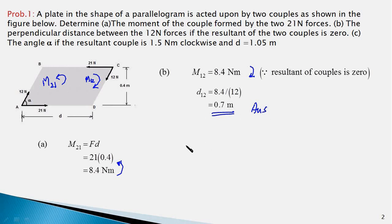Part c asks us to find the angle alpha if the resultant couple is 1.5 newton-meters clockwise and d is 1.05 meters. The resultant of the two couples is 1.5 newton-meters clockwise. Let's first add the two couples to find m12.